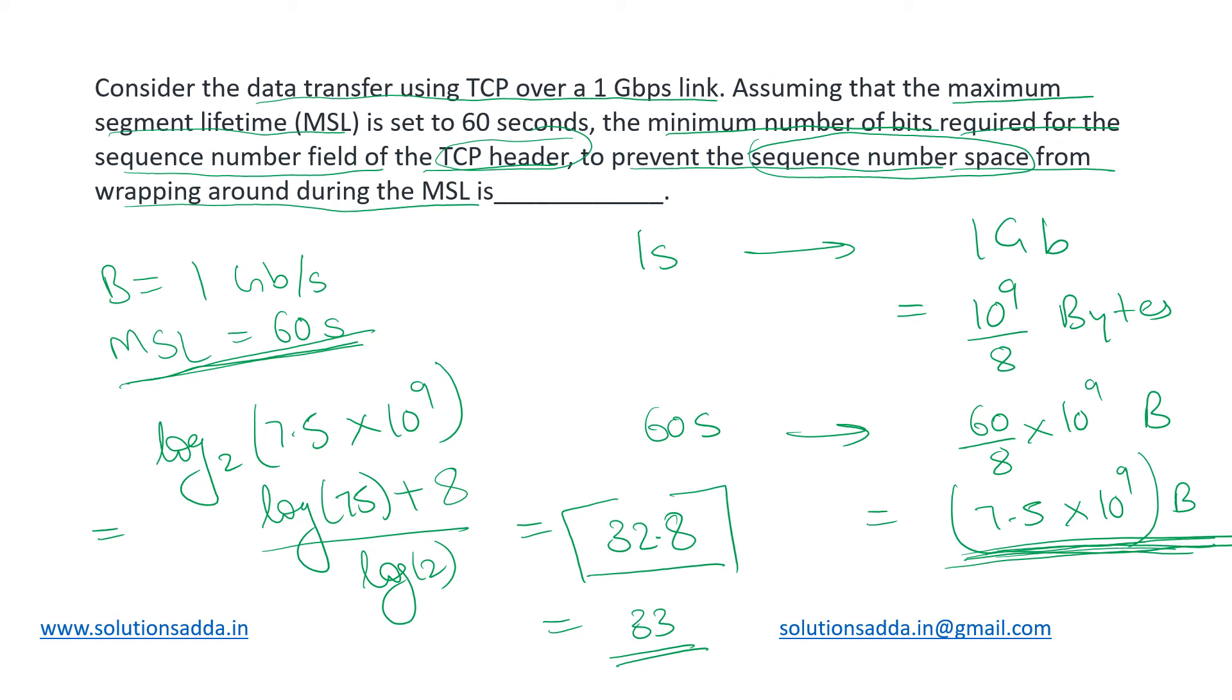So we need 33 number of sequence number bits in order to accommodate all these segments during the MSL amount of time. And if the sequence number field exceeds this limit, then the leftover of them would be placed at different places. We have the field reserved for that as well.